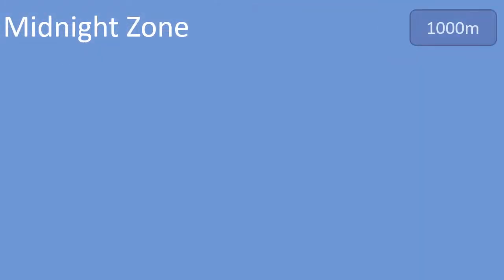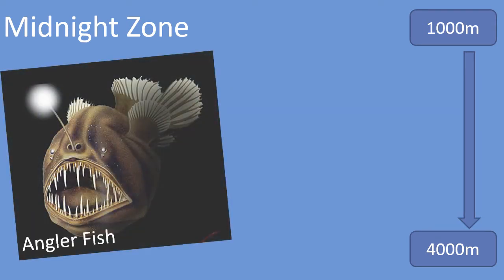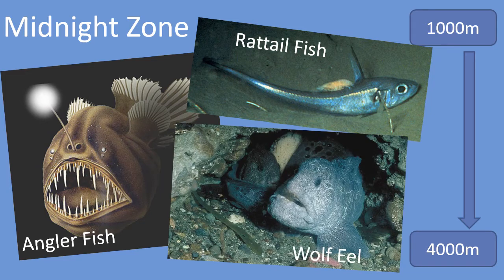The midnight zone begins at a depth of 1000 metres and goes down to a depth of 4000 metres. It is completely dark in this zone and animals such as the anglerfish have adapted to survive here. The female anglerfish attracts prey with her bioluminescent light. Other creatures living here include the rat tailfish and the wolf eel. There is very little food here and the creatures will eat any organisms which come their way.